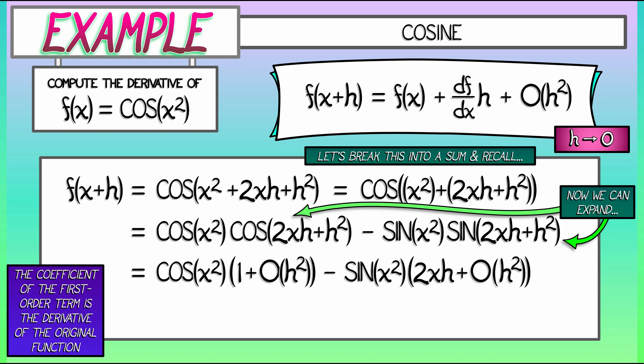Now, what do we do? We distribute the multiplication, sorting things out term by term. The zeroth order term in this expansion is cosine of x squared times one. That's just f(x). Of course, that makes sense. Let's see. Where's the next highest order term? Oh, there's an h all by itself in that 2xh that gets multiplied by negative sine of x squared. So we have, for the first order term, negative 2x sine of x squared times h. And then all the other terms get tossed into a big O of h squared.